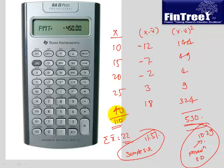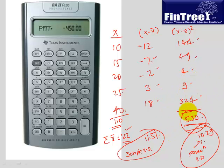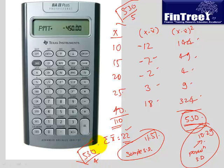Let's do it together. The total of the dataset is 110, so 110 divided by 5 gives mean = 22. X minus X-bar: 10−22 = −12, 15−22 = −7, 20−22 = −2, 25−22 = 3, 40−22 = 18. Squaring these: 144, 49, 4, 9, 324. Total = 530. For population standard deviation: square root of (530 / 5). For sample standard deviation: square root of (530 / 4). Sample standard deviation will always be higher than population standard deviation because the denominator is n minus 1.